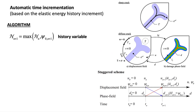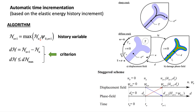Basically, we decouple the two problems — the mechanical problem from the crack topology — and we introduce a history field. This history field contains the maximum mechanical elastic energy. Our idea was to limit the increment of this energy, so we defined a maximum history increment. This was defined based on the homogeneous solution multiplied by a scalar variable, which by default is 0.5, so 50 percent.